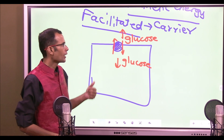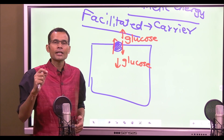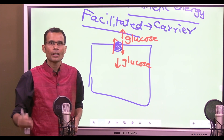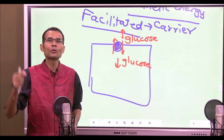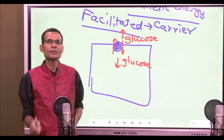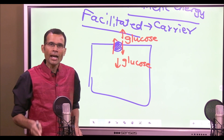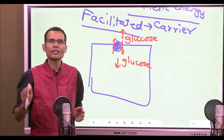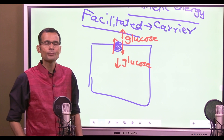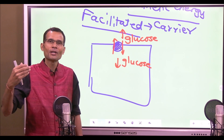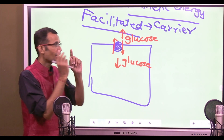Let me give you an example: secondary active transport is another type of transport in which a carrier is involved. In secondary active transport, the carrier carries the substance from low to high concentration — at least one substance is carried from low to high. This means carriers can carry substances from low to high concentration. Then why, in the case of facilitated diffusion, does the carrier transport from high to low only as net transport? That's the most important part.